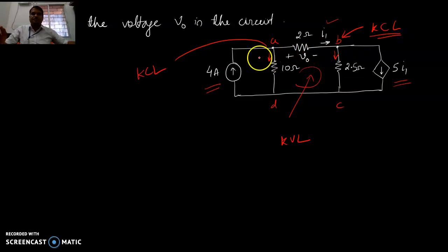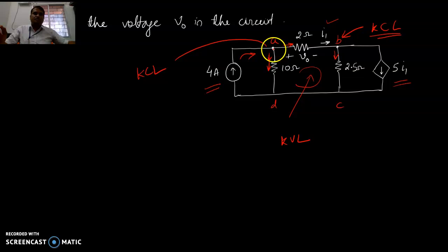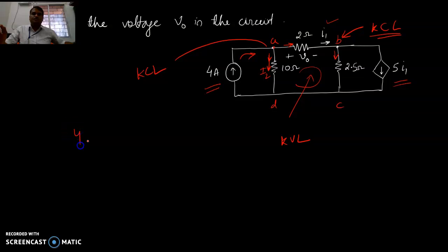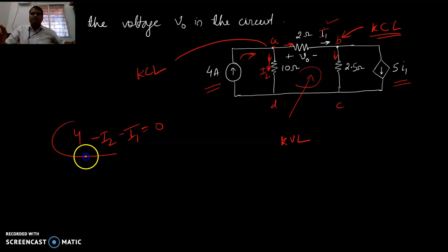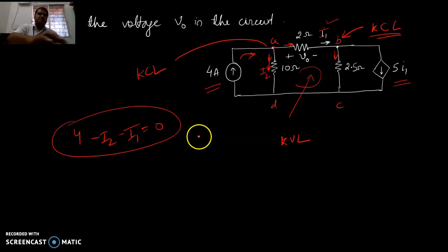Applying KCL: this current is entering, the current over here is coming out, and the current over here is going out. So if this current is I2, then: 4 ampere minus I2 minus I1 equals zero. You can write in capital letters since these are DC quantities.